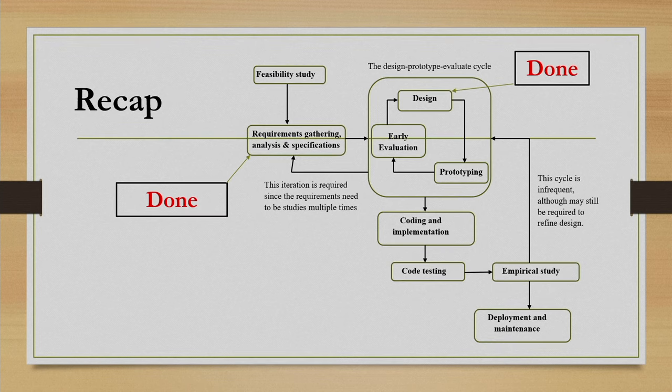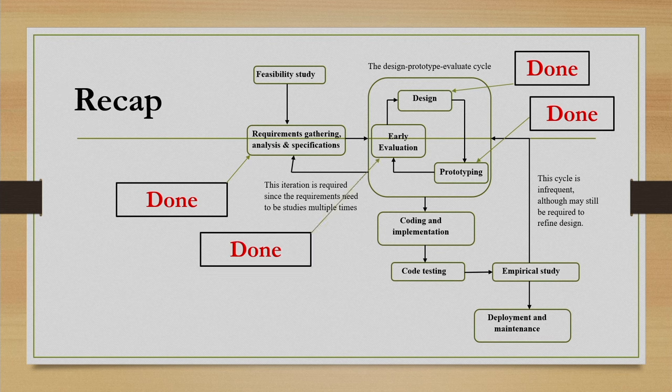Next we covered the design stage, where we primarily focused on interface and interaction design — the outcome is a design document. Then we covered prototyping: how to make prototypes out of the design document and the different types of prototypes, with the outcome being the prototype itself. Next we covered quick evaluation of prototypes, primarily aimed at unearthing usability issues. Here the evaluation is done by domain experts and end users may not be part of the process, but it gives us a quick way of getting usability issues. If issues are found we can refine the design, prototype again, and evaluate — so this design-prototype-evaluate cycle continues until we arrive at a stable design.